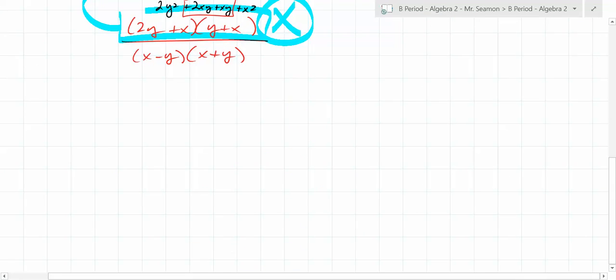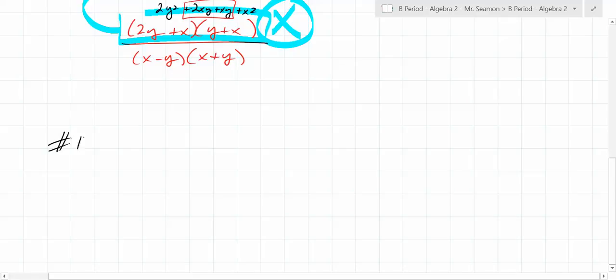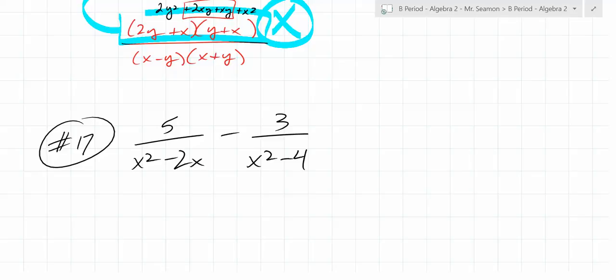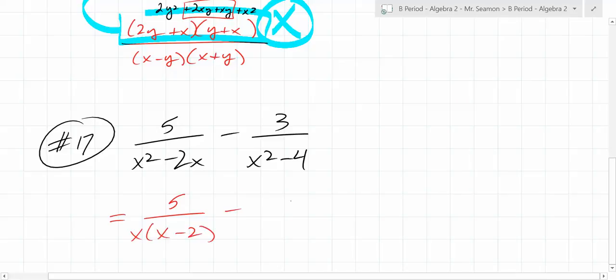What do you want to do? Number 17. So we have 5 over X squared minus 3 minus 3 over X squared minus 4. Again, not an equation, so we're just simplifying. Fractions, what do we need? Common denominator. In order to find a common denominator, what would it be helpful for us to do? Factor. So this is 5 over X minus 3 times X plus 1 minus 3 over X plus 2 times X minus 2.